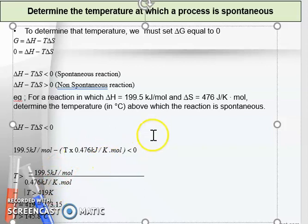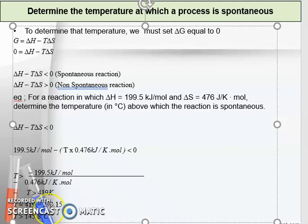Since the question asks for the temperature in degrees Celsius, we convert from Kelvin to Celsius. Therefore, the temperature at which the process is spontaneous must be greater than 145.8 degrees Celsius.